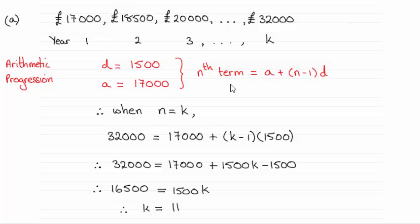And you should be familiar with this formula: the nth term of an arithmetic progression is given by A plus N minus 1 times the common difference D, where N is the number of terms.